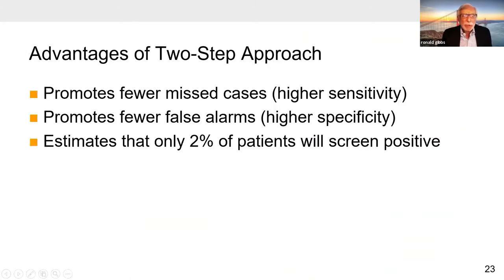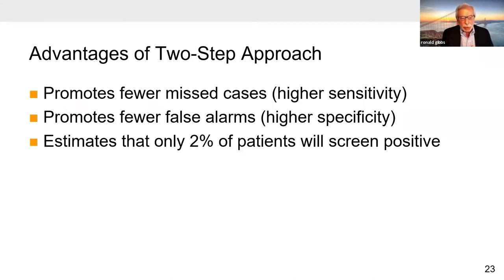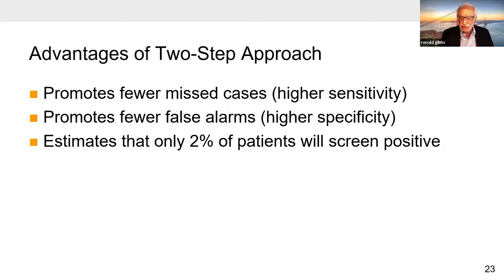We propose that the advantage of this two-step approach will be that it promotes fewer missed cases — that is, has a higher sensitivity and a better ability to detect women with sepsis — and fewer false alarms, that is, higher specificity. From looking at data of normal women, we estimate that only two percent of patients will be screened positive, and therefore there should be few false alarms.